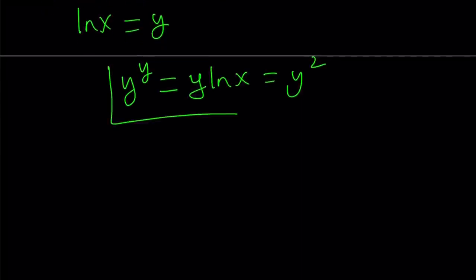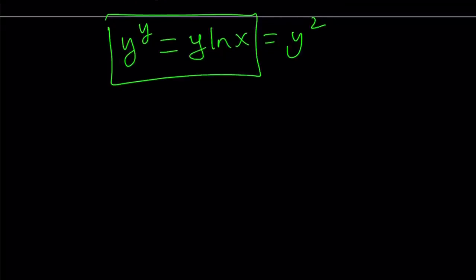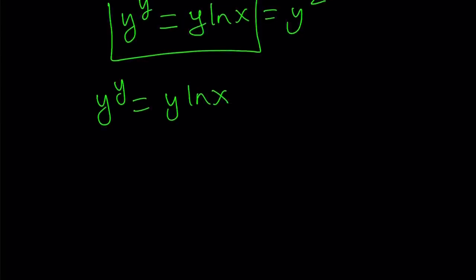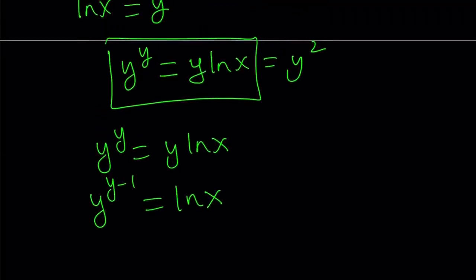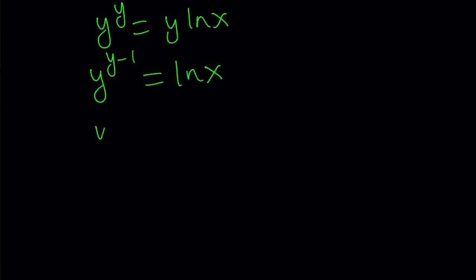I just want to show you an alternative way to look at it. We have y to the y equals y times ln x. We can divide both sides by y, giving us y to the power of y minus one equals ln x. Since ln x equals y, we can replace ln x with y, so y to the power of y minus one equals y.